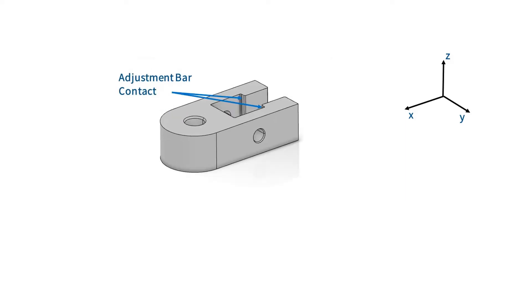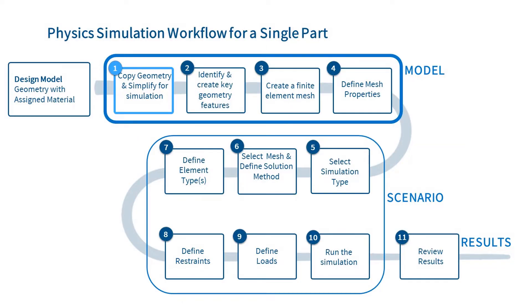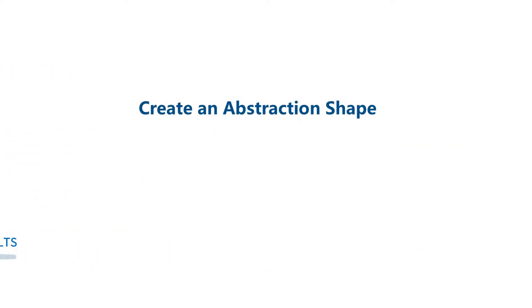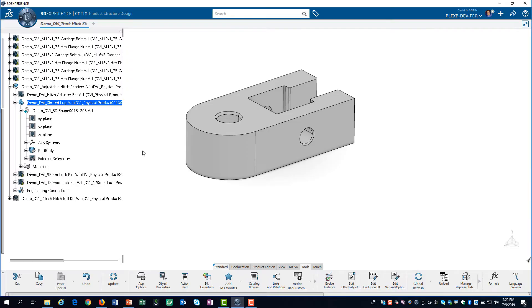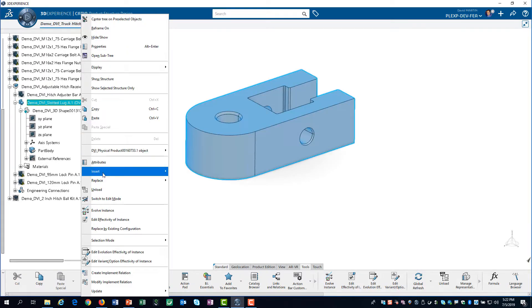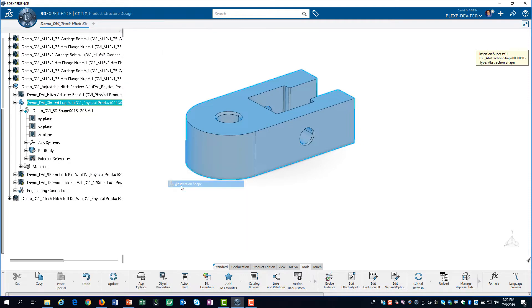We will replace the contact between the lug and the adjustment bar with a restraint in the X direction. We don't need to create any additional geometry to do this, but we will create a publication. Let's get started with Step 1. We will create an abstraction shape. An abstraction shape is a container into which we place a dependent copy of the part's original geometry. We right-click on the slotted lug part and select Insert, Abstraction Shape.